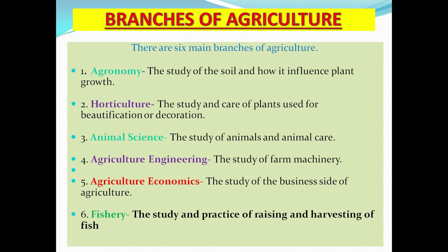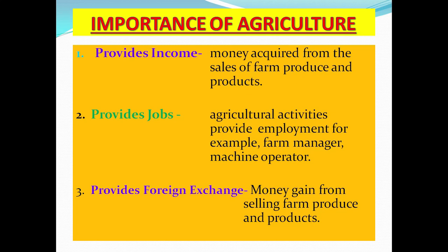Now let us look at the importance of agriculture — the benefits of agriculture and why it is practiced. Number one: agriculture provides income — money acquired from the sales of farm produce and products. Number two: agriculture provides jobs. Agricultural activities provide employment, for example farm managers and machine operators.